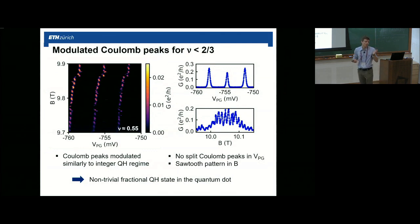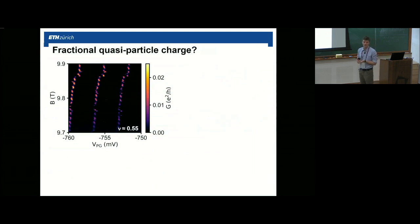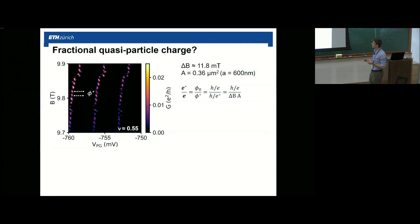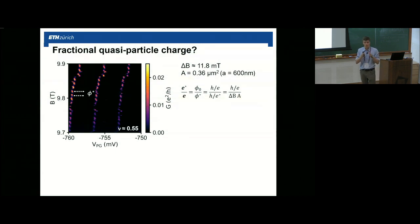This effect persists up to 60 mK and up to 30 microvolts in bias. The big question is whether we see fractional quasi-particles or fractional charge. If one of those lines corresponds to a rearrangement of fractional charge, the spacing between lines in magnetic field would correspond to a fractional flux quantum. From a measured magnetic field spacing of 12 millitesla and an assumed area of roughly 0.36 micrometers squared (accounting for lateral depletion), we calculate a number close to one — so we do not observe any fractional charge so far.